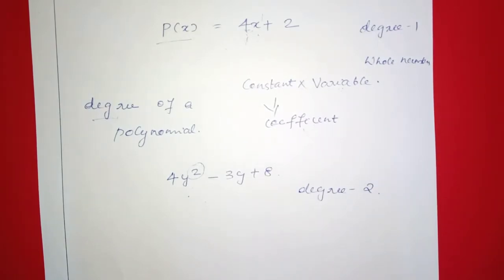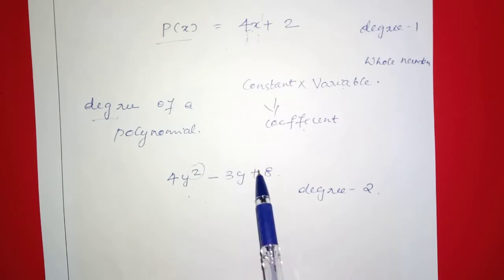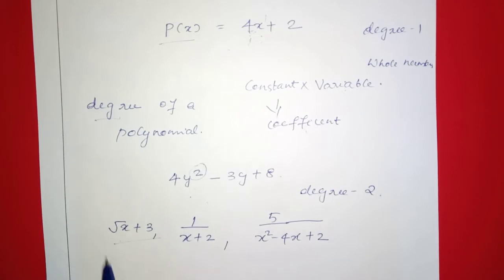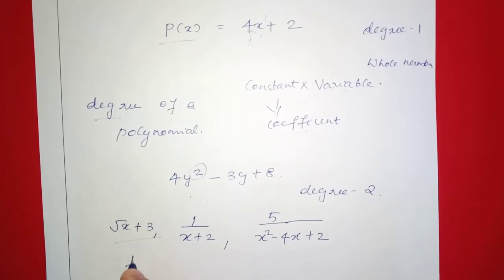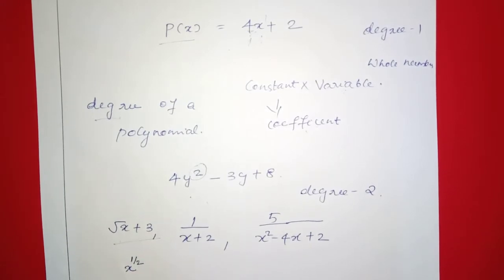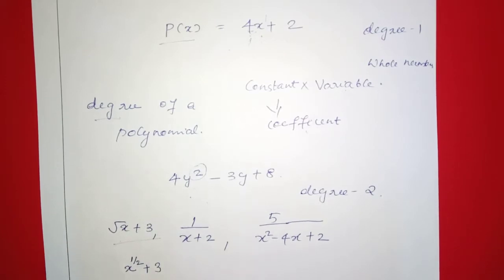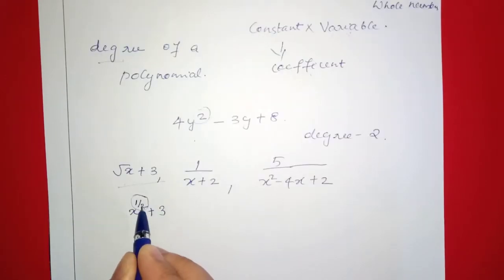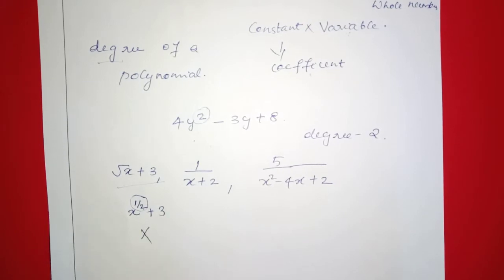Now, if you have any powers, they must be whole numbers. The first example is root x plus 3. Is this a polynomial? If we use root x, we write it as x to the power of 1/2 plus 3. The power 1/2 is not a whole number, so no — this is not a polynomial.